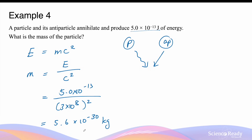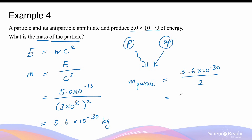Remember, this is the combined mass. To find the mass of the individual particle, we assume the particle and antiparticle have equal mass. So the mass of the particle — or antiparticle — is the combined mass divided by 2, which yields a value of 2.8 times 10 to the minus 30 kilograms.